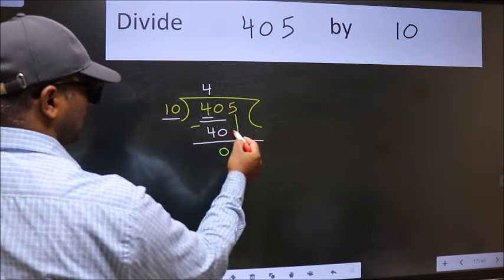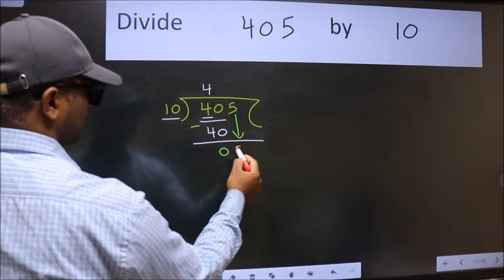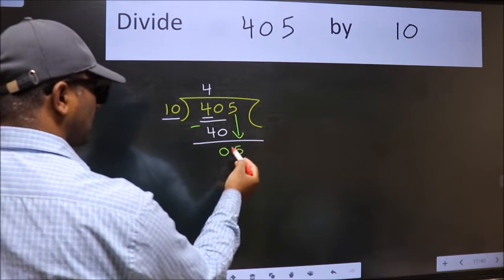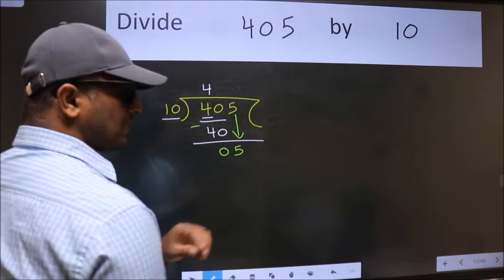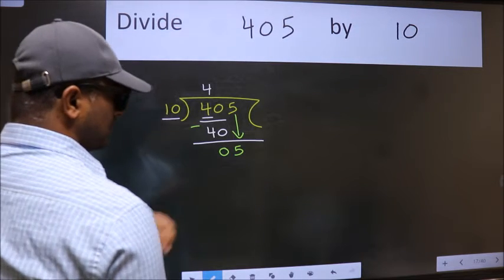After this, bring down the beside number. So, 5 down. After this step, the mistake happens, and the mistake is this.